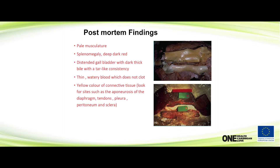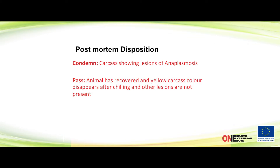You're going to get a distended gallbladder because the animal's not eating properly, with thick tar-like consistency bile. For both babesiosis and anaplasmosis — if you have an animal showing clinical signs on ante-mortem, especially with pyrexia or debilitation, it should be condemned. But if an animal has recovered from disease and is still showing some yellow color, it may not necessarily need to be condemned — the yellow color can dissipate after chilling of the carcass.